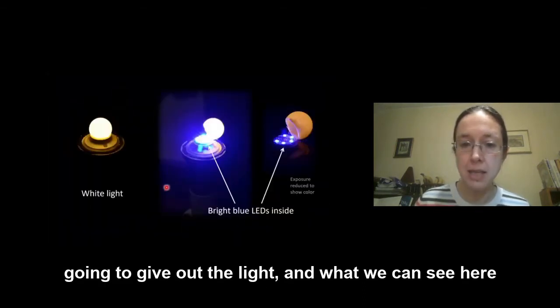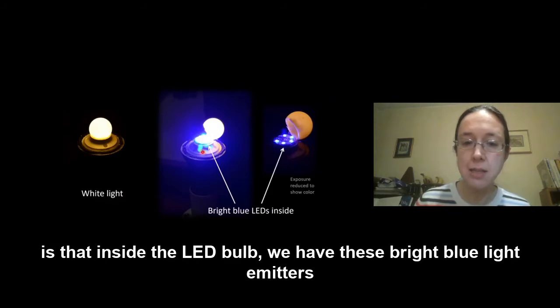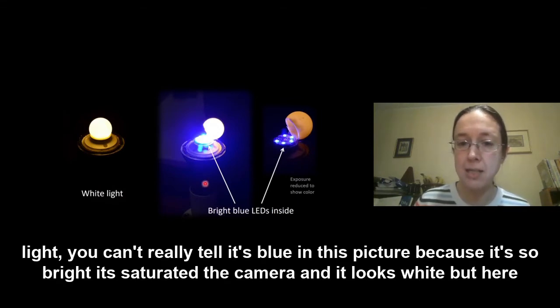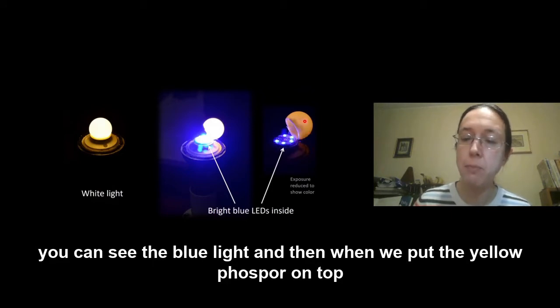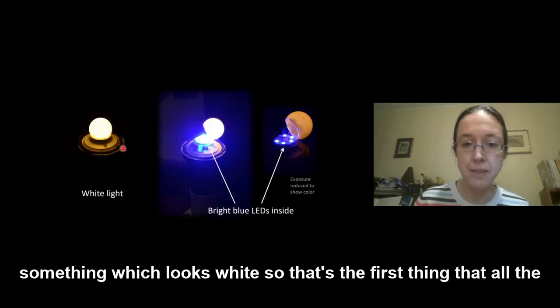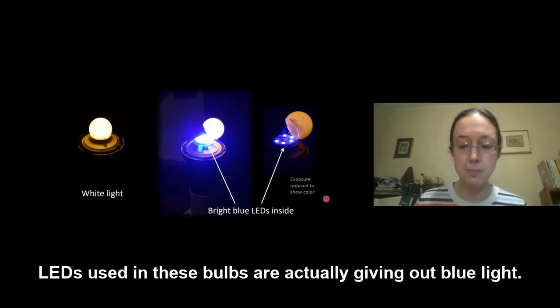And what we can see here is that inside the LED bulb we have these bright blue light emitters. So our LEDs in our white light bulbs are actually giving out blue light. You can't really tell it's blue in this picture because it's so bright it's saturated the camera and it looks white. But here you can see the blue light and then when we put the yellow phosphor on top it absorbs some of the blue and gives out yellowish light and the two together give us something which looks white. So that's the first thing that all the LEDs using these bulbs are actually giving out blue light.